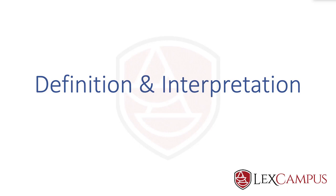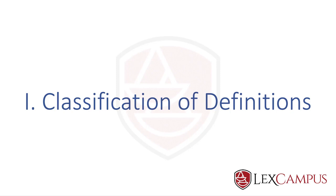Section 2 deals with definition and interpretation. Although the classification is not readily apparent when you read it, section 2 does have different classifications. If you classify the definitions in section 2, you will see that it has at least seven different types of definition.